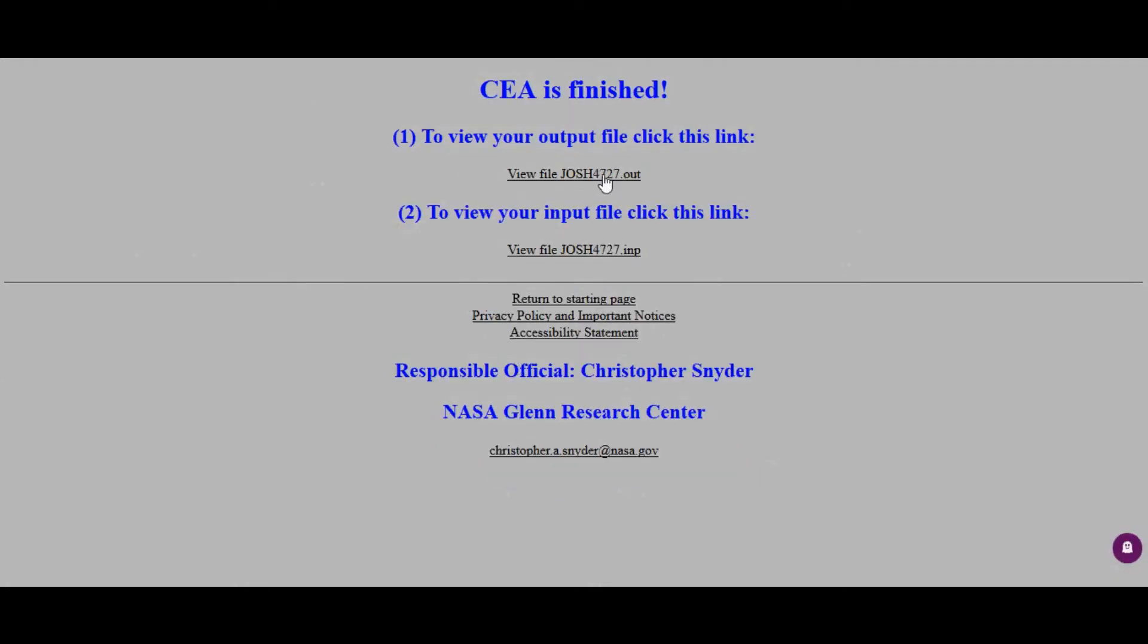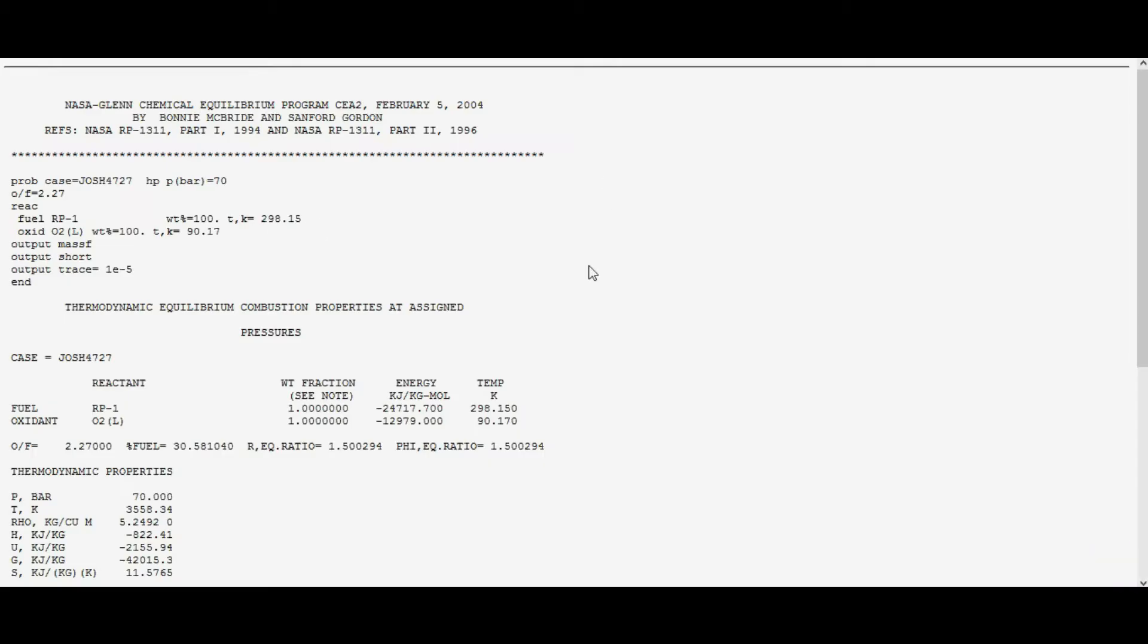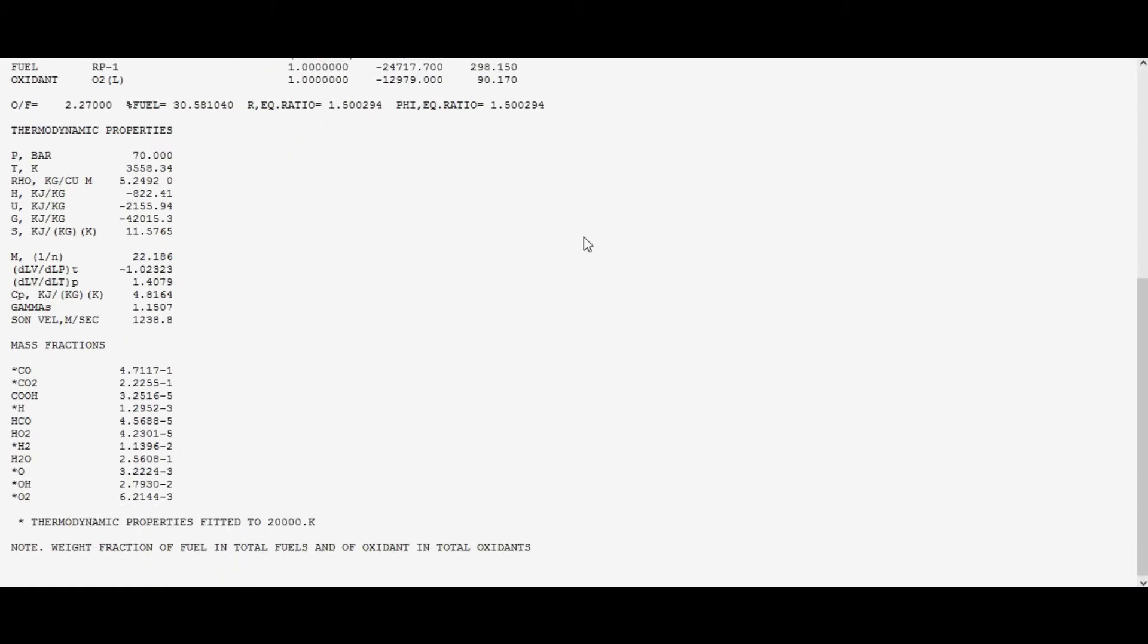And then you can see we have the output file. Now the values that we want are at the bottom here. If we scroll to the bottom, you can see the thermodynamic properties. Note that these don't have the naught next to them, but these are the stagnation values because we used the stagnation pressure. Here, this should be the pressure that we input, so 70 bar is 7 megapascals, so that's good. This is T naught, which is one of the things we want. It's in Kelvin, 3,558.34 Kelvin, so make a note of that. This is rho naught in kilograms per cubic meter, 5.2492 kilograms per meter cubed, make a note of that.